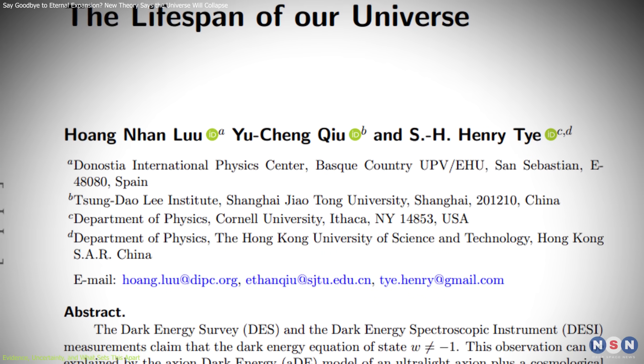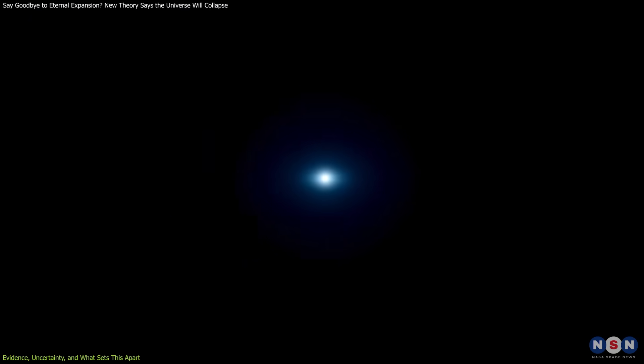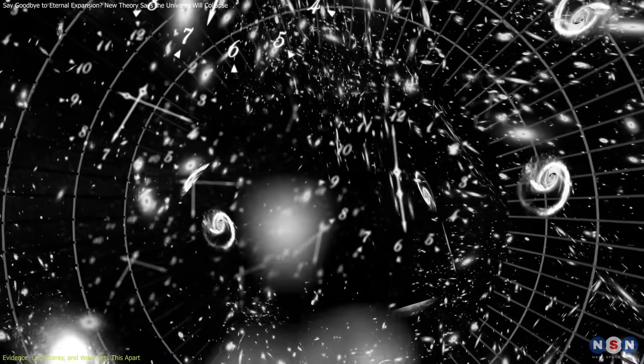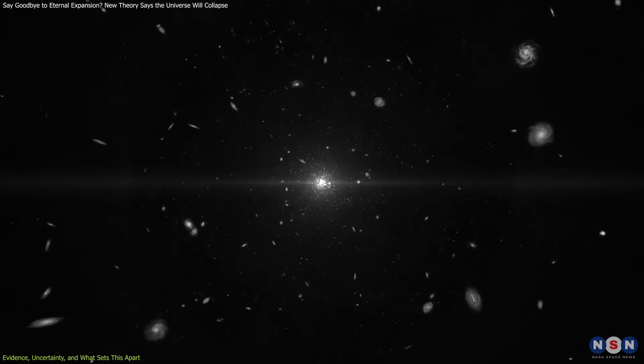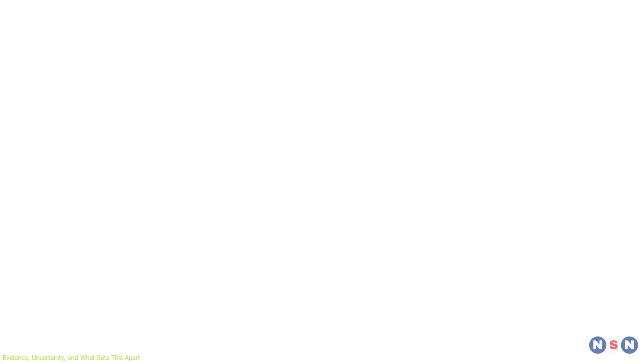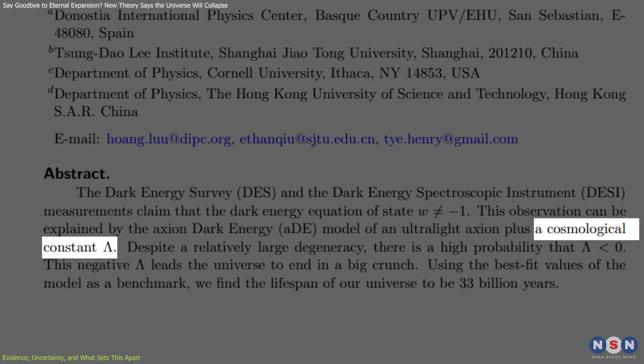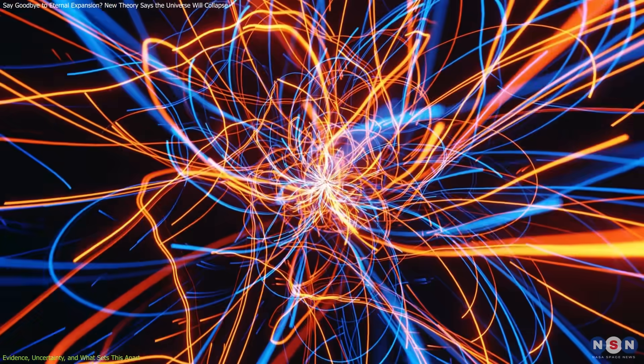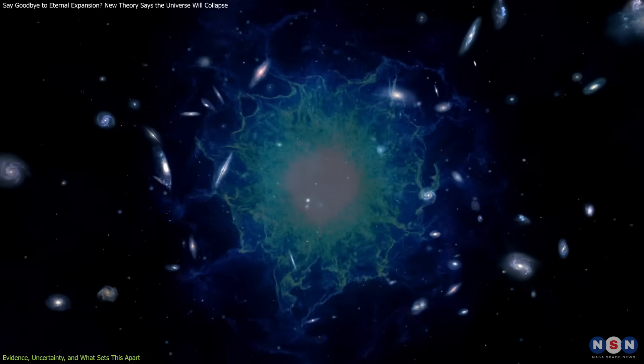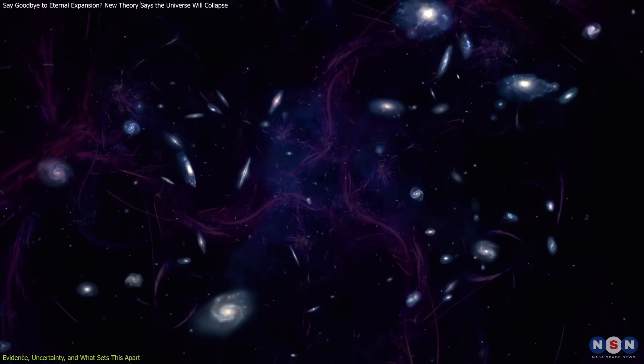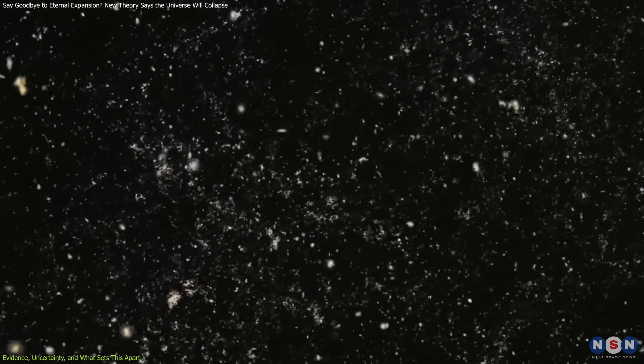What sets this work apart is its testable prediction. Instead of offering a vague vision of distant cosmic decay, it gives a specific timeline. Expansion halts in 7 billion years, collapse begins thereafter, and the universe ends in a crunch 20 billion years later. It also brings in a negative cosmological constant, an idea present in some versions of string theory and quantum gravity, but rarely discussed in mainstream cosmology. When combined with a dynamical axion field, the result is a mathematically consistent scenario that fits the current, albeit limited, observational data.